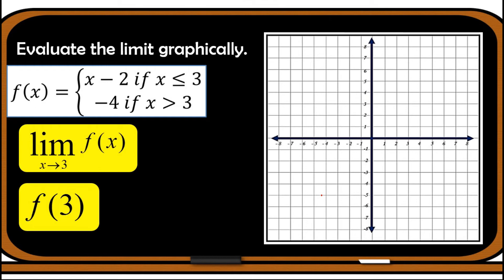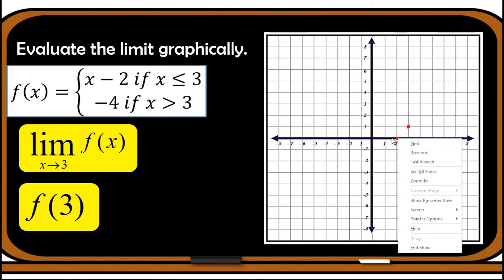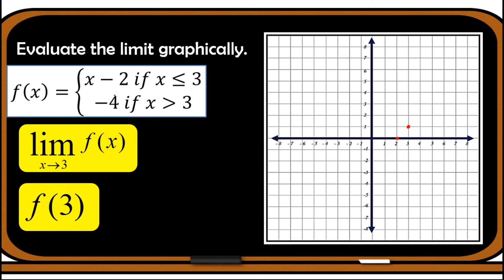For the fourth problem, let us evaluate the limit of this piecewise function graphically, but this time the graph is not yet provided, so let us first sketch the graph. Beginning with x - 2 if x ≤ 3: when x = 3, 3 - 2 = 1, so we have the point (3, 1). For x = 2, 2 - 2 = 0, giving point (2, 0). For x = 1, 1 - 2 = -1, giving point (1, -1). For x = 0, 0 - 2 = -2.